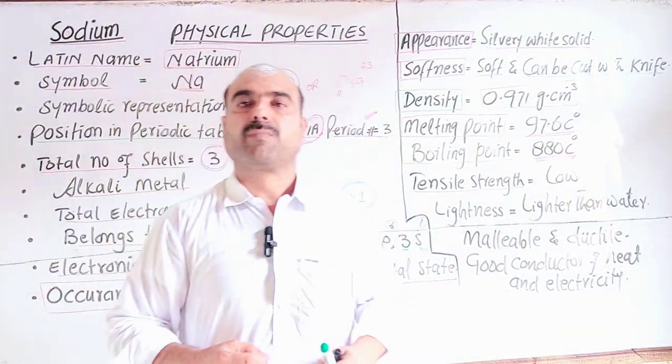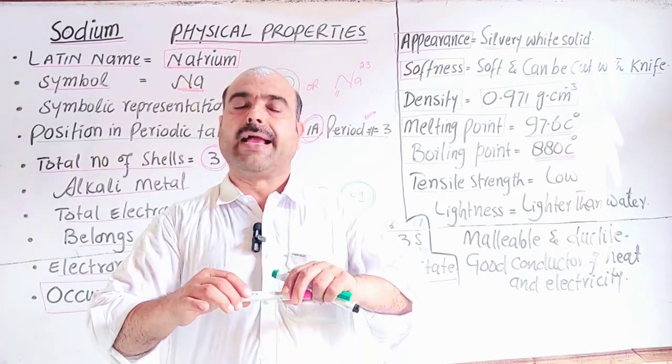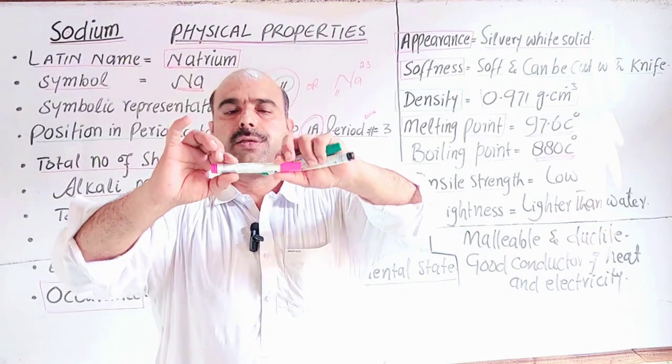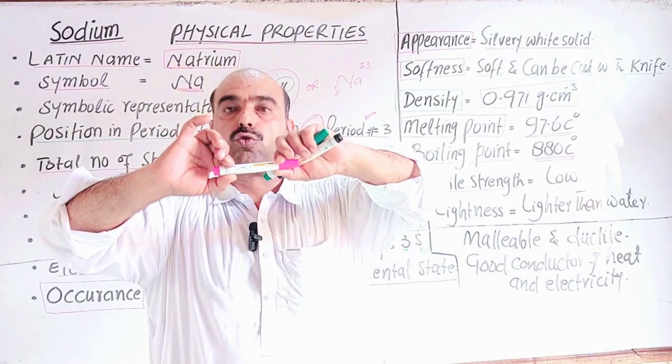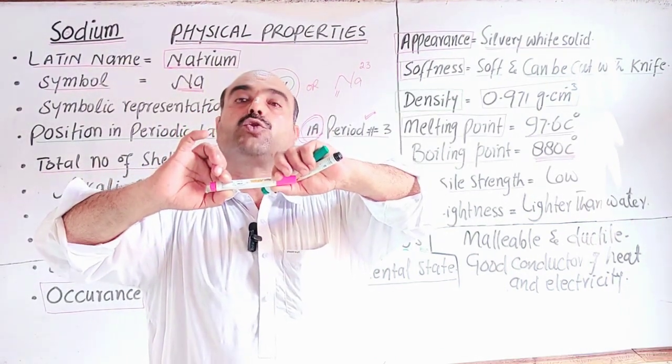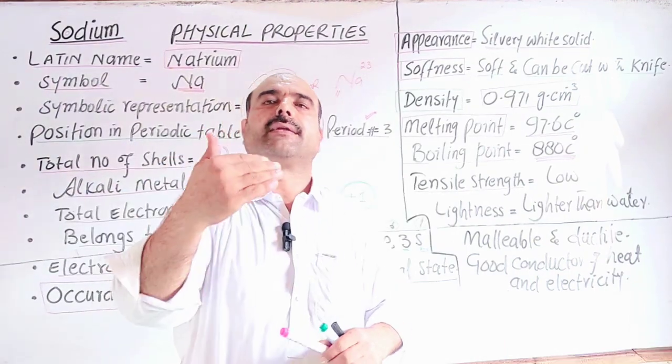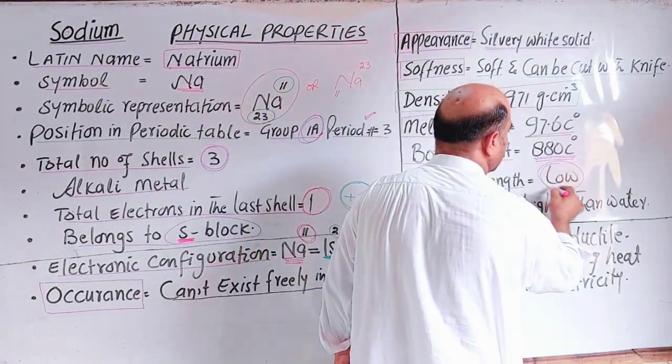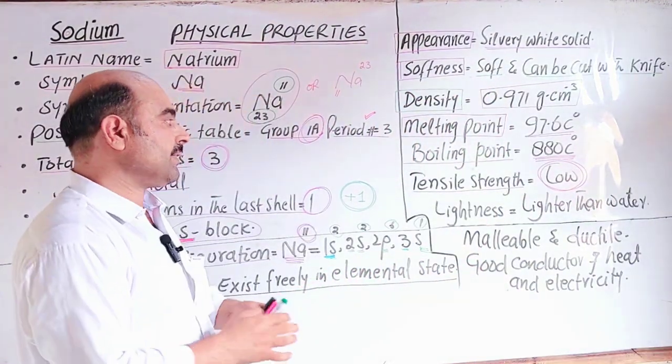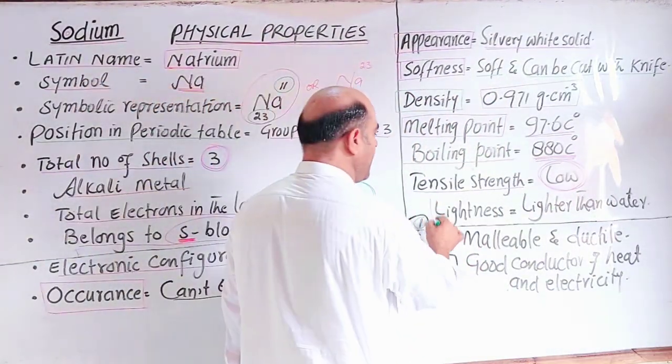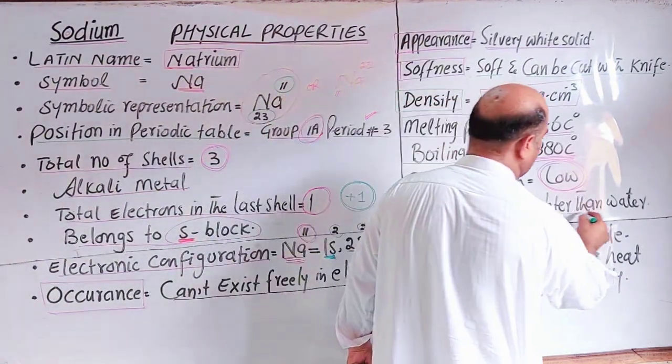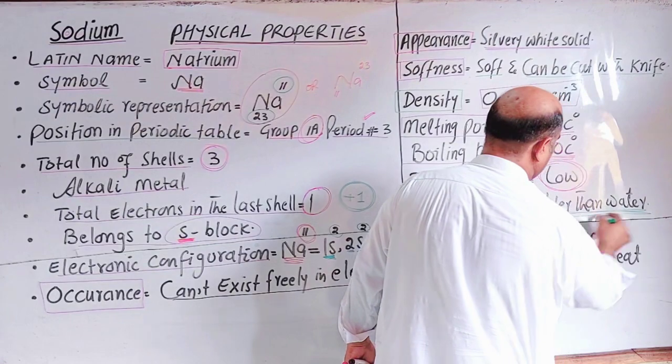Tensile strength means longitudinal stress - when you pull something in opposite directions. Sodium has low tensile strength because it is soft. Lightness: It is lighter than water, which is why it can float on the surface of water.